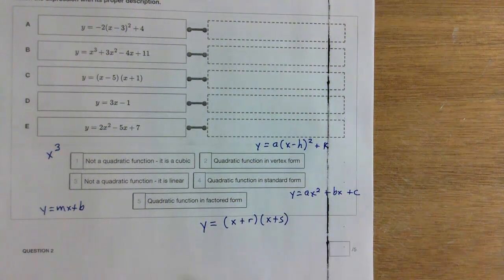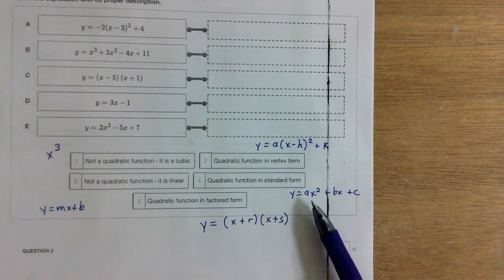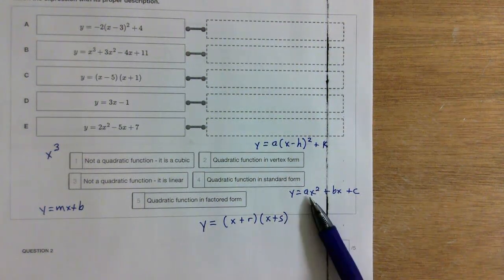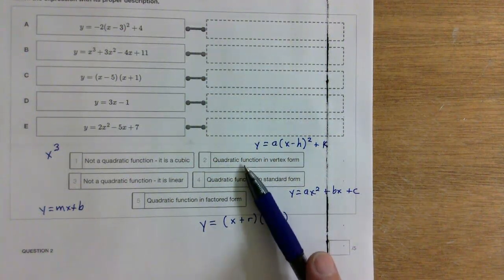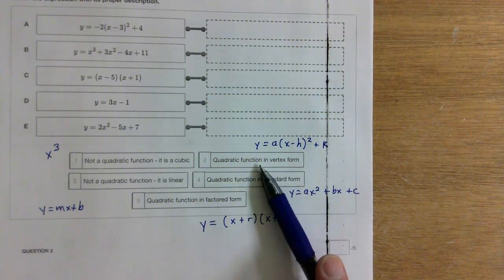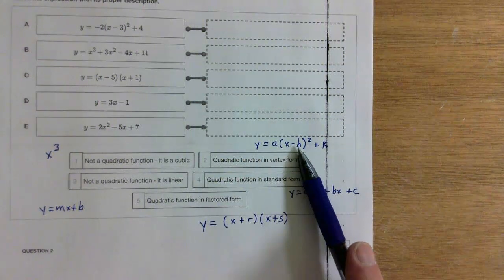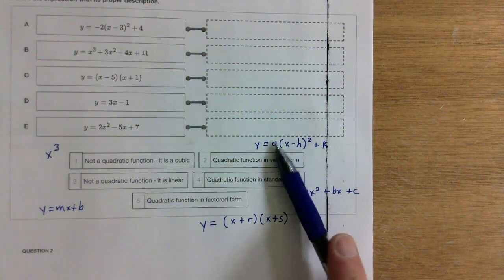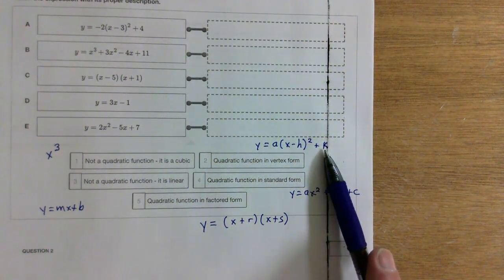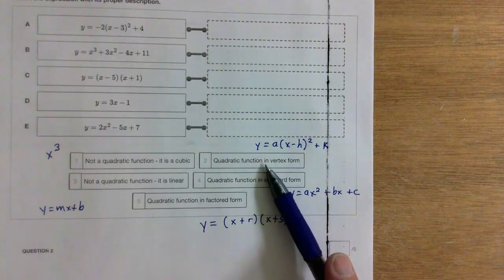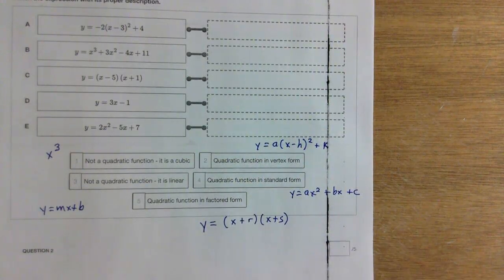Both remaining are quadratics. Remember, standard form has three terms: something times x squared, then an x term, and then a constant with no x — that's the y-intercept. Vertex form is the weird one: it has something like (x minus something) squared inside parentheses, with a plus k on the outside. There's probably a number in front. You should be able to find those.